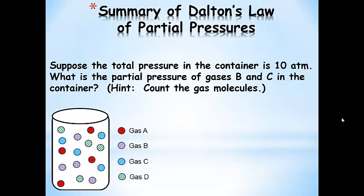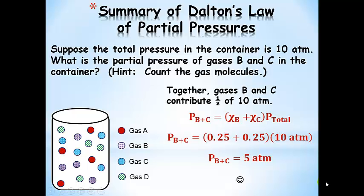Now if we increase the total pressure to 10 atmospheres and look at the partial pressures of gases B and C together: together they contribute one-half of 10 atmospheres. We take the mole fraction of B and C, add them — each contributes one-fourth — multiply by 10 atmospheres, and end up with 5 atmospheres.